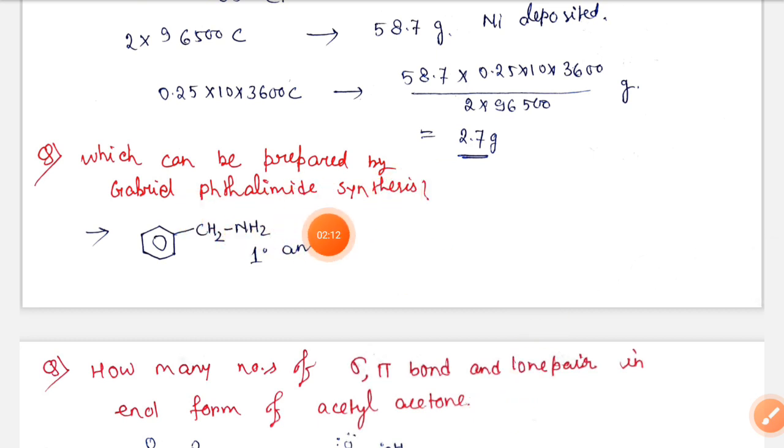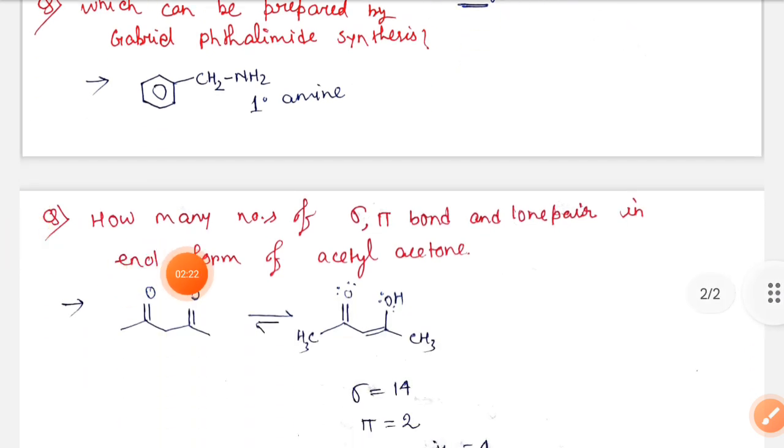Next, which can be prepared by Gabriel phthalimide synthesis? We know that from Gabriel phthalimide synthesis, primary amine will be produced. So here in this case the correct option is this. Now, how many numbers of sigma, pi, and lone pair in enol form of acetyl acetone?